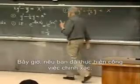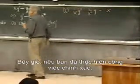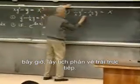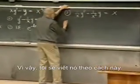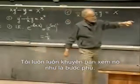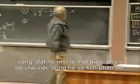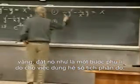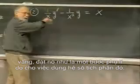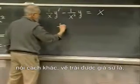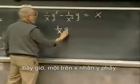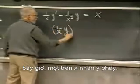Now, if you have done the work correctly, you should be able to integrate the left-hand side directly. I'm going to write it this way. I always recommend that you put in as an extra step the reason for using that integrating factor. In other words, that the left-hand side is supposed to be, now, one over x times y prime.